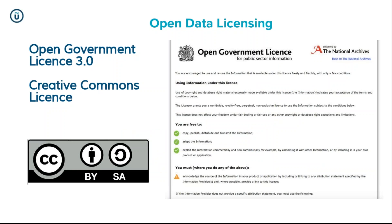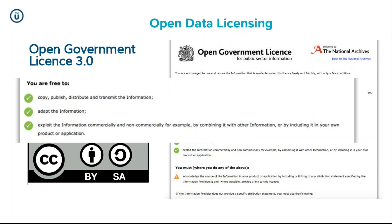To publish open data you need to publish under an open data licence. The main one used in the UK by public sector, private sector, and universities is the Open Government Licence, now version three. It allows people the opportunity to use the data and exploit the information commercially or non-commercially. It also protects the publishing organisation — there's no liability if the data is wrong or if the data ceases to be available and people have built services on it.